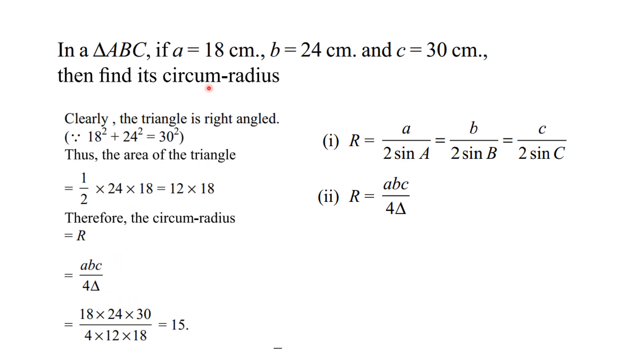First, notice that this is a right-angled triangle. Since 18 squared plus 24 squared equals 30 squared, this triangle is indeed a right-angled triangle.